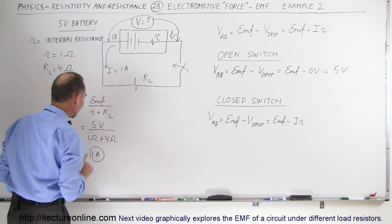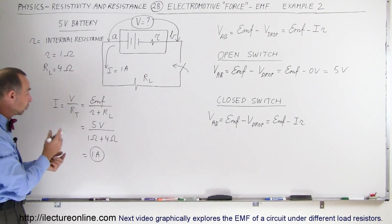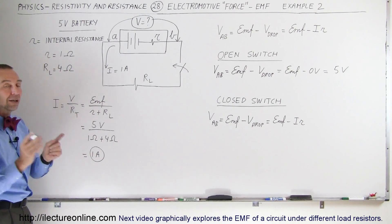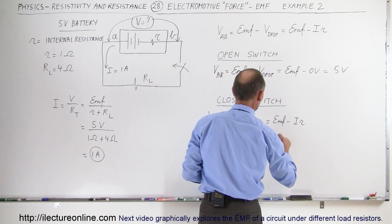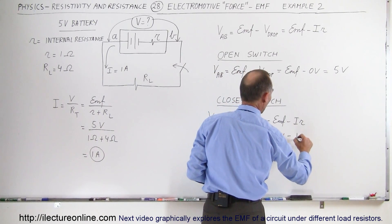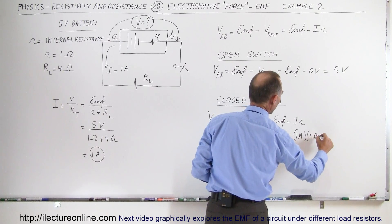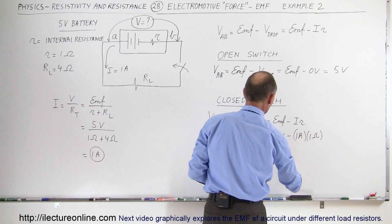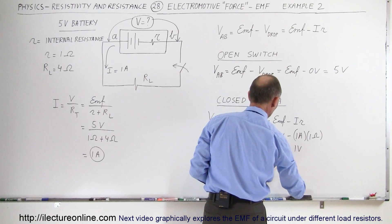The current in the circuit is 1 amp. Plugging that into our equation, we get the 5 volts of the EMF minus 1 amp times the internal resistance of 1 ohm, which equals 5 volts minus 1 volt, or 4 volts.